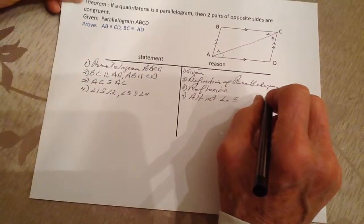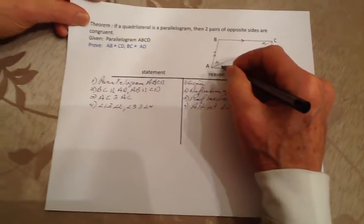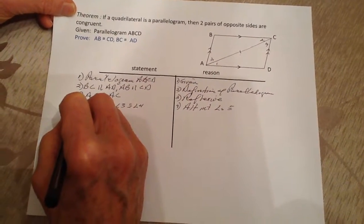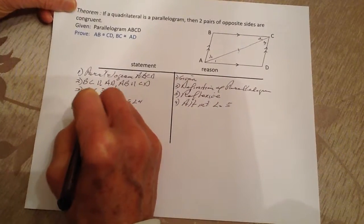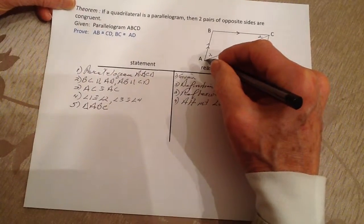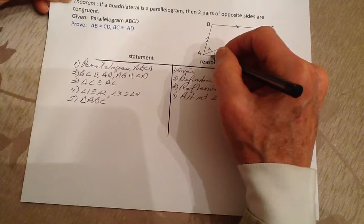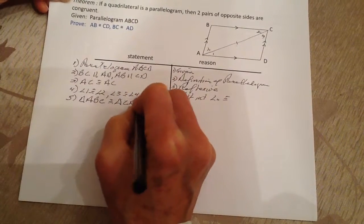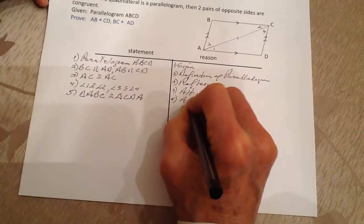We have enough information using angle-side-angle to make these two triangles congruent. So number five: triangle ABC is congruent to triangle CDA by angle-side-angle.